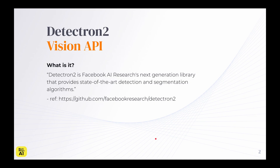Detectron 2 Vision API — what is it? Detectron 2 is Facebook AI Research's next-generation library that provides state-of-the-art detection and segmentation algorithms. If you want to read more about it, you can check out the link that references the original Detectron 2 GitHub repo documentation.